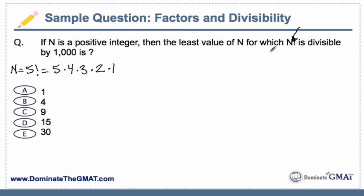Now the question is asking: which n factorial is going to be the least one that is divisible by 1,000? That means 1,000 can divide into whatever we're talking about — in other words, it is a multiple of 1,000. So the bottom line is it's going to have to be bigger than 1,000, and that's helpful for us to actually eliminate some wrong answer choices.